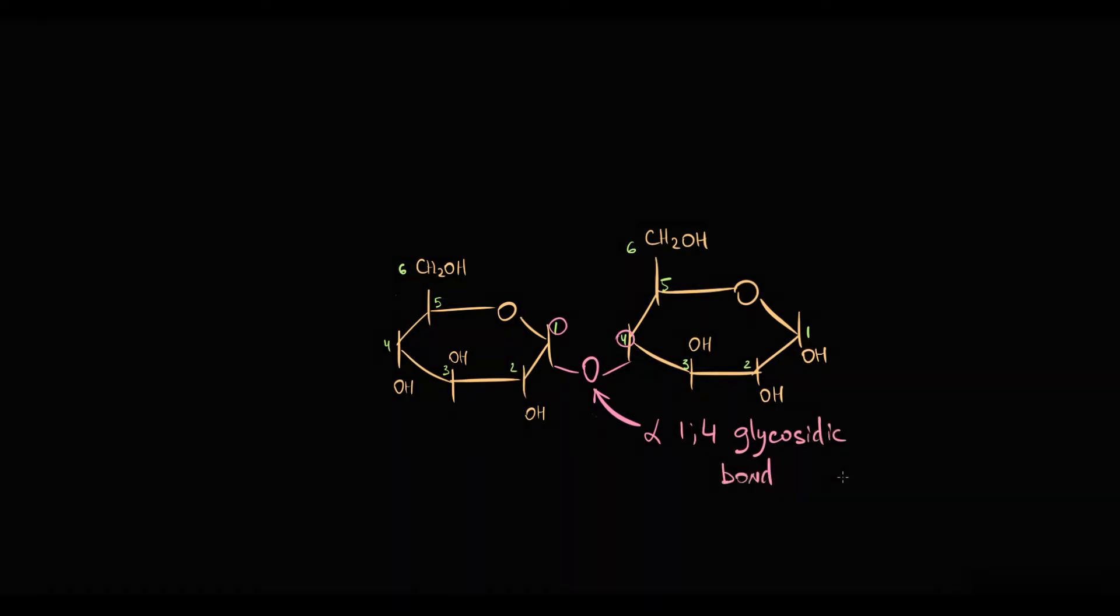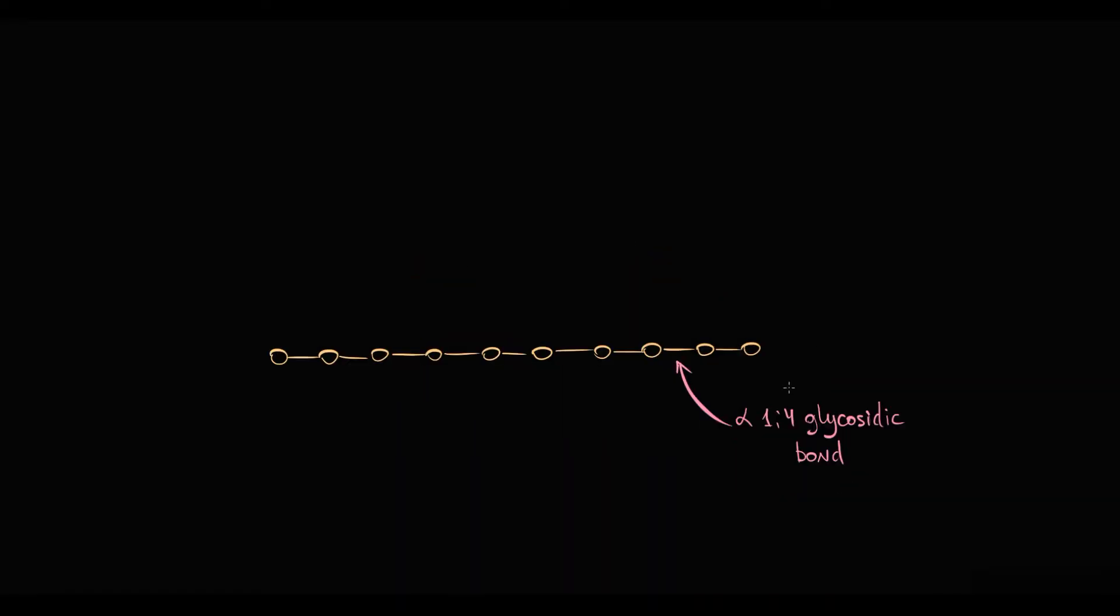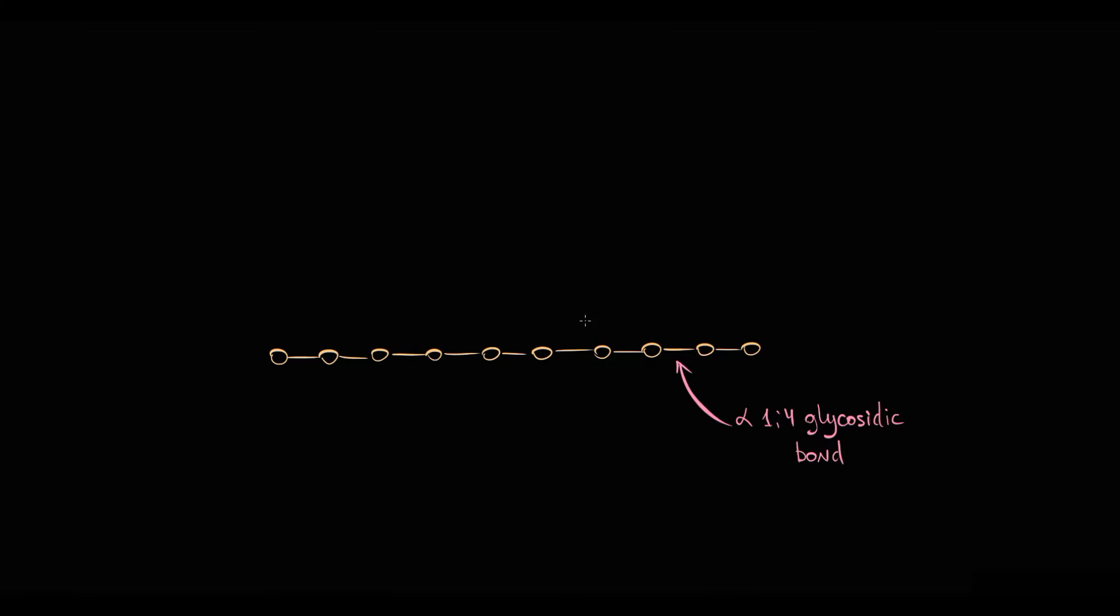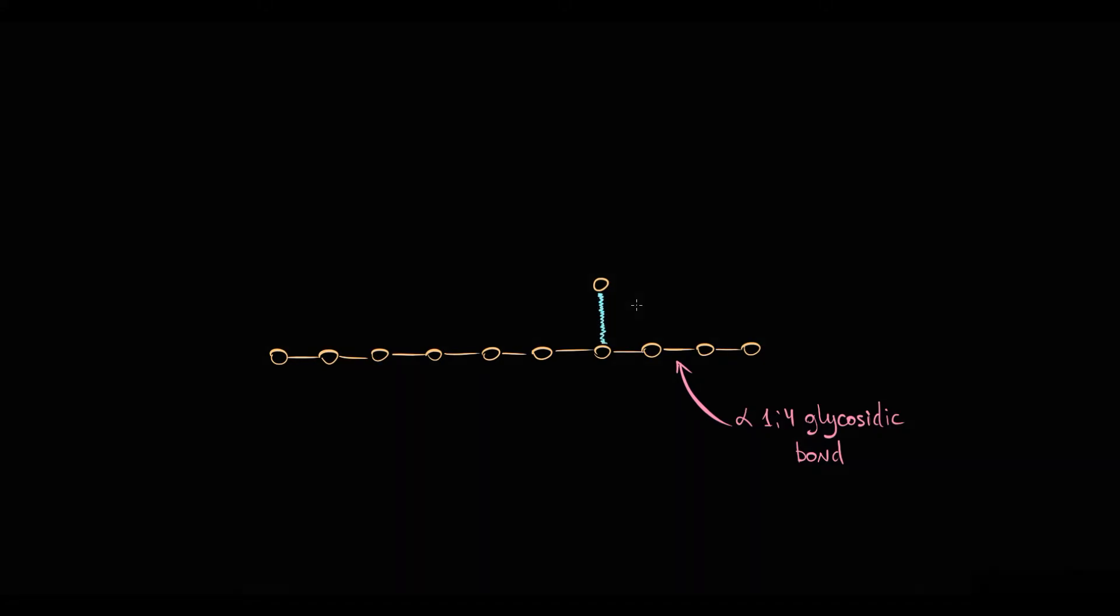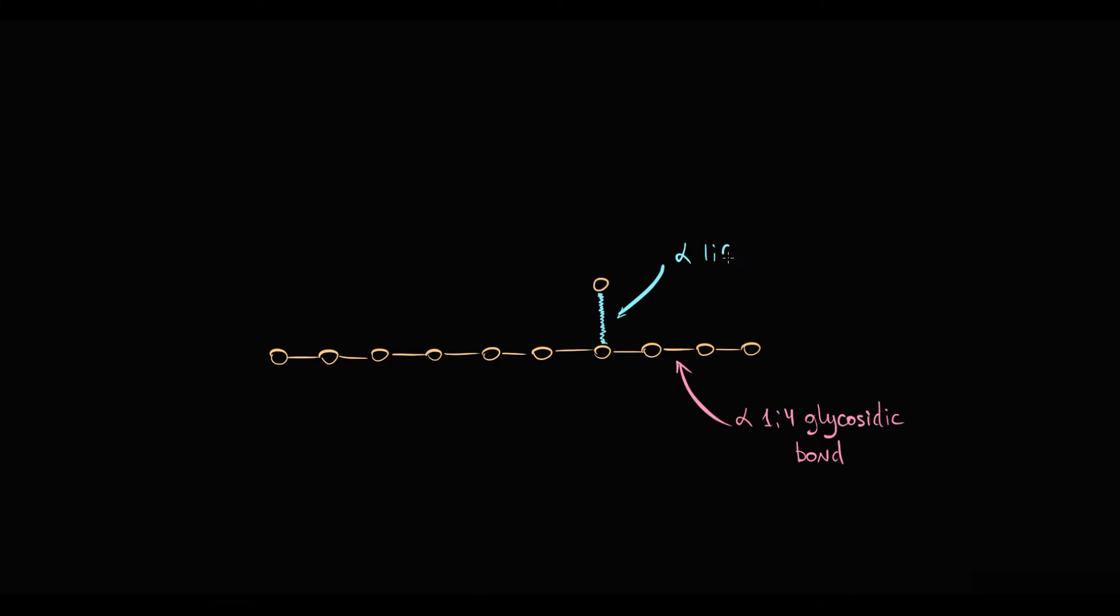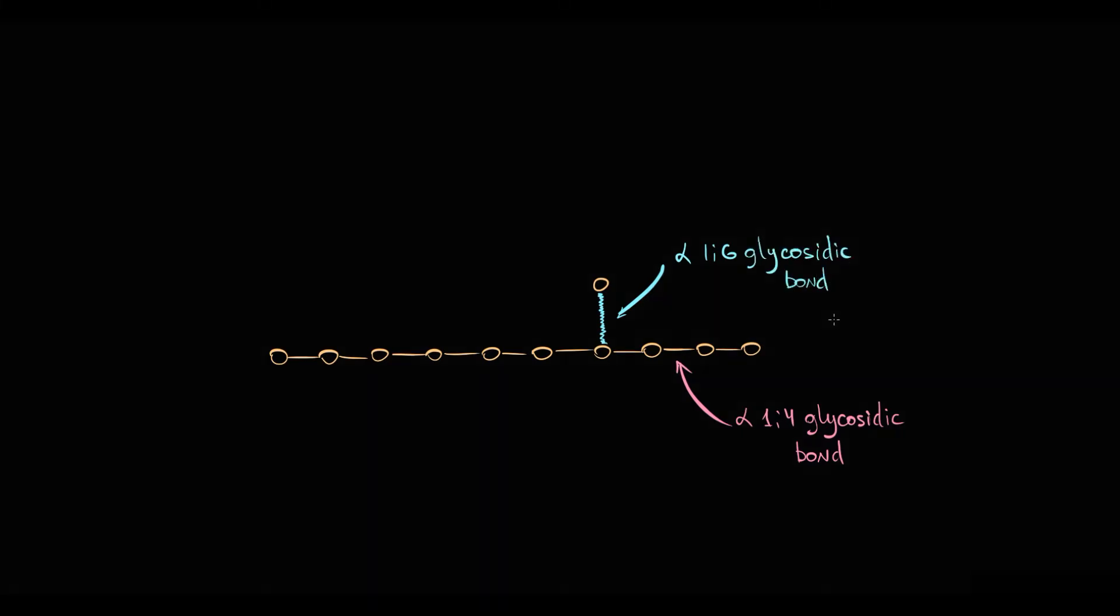Obviously, glycogen cannot store huge amounts of glucose molecules just in one line. So glycogen has branches. Branches are created by connection of additional glucose molecules to one of the glucose molecules in this linear structure. But important that to create branch, these glucose molecules have to be bound by alpha-1,6-glycosidic bond.